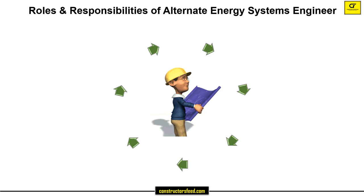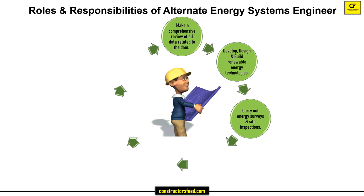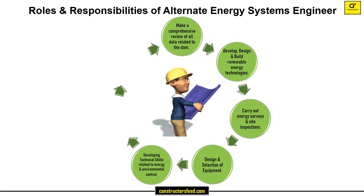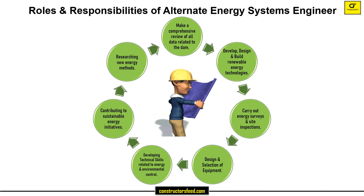Some of the roles and responsibilities of an alternate energy systems engineer: make a comprehensive review of all data related to the dam; develop, design, and build renewable energy technologies; carry out energy surveys and site inspections; design and selection of equipment; developing technical skills related to energy and environmental control; contributing to sustainable energy initiatives; and researching new energy methods.